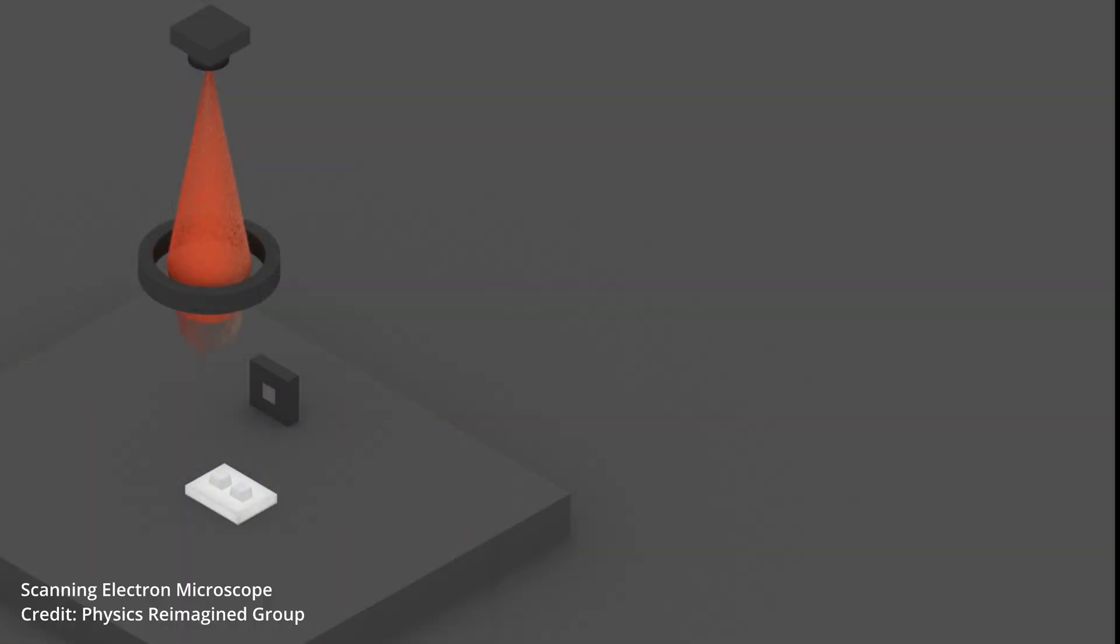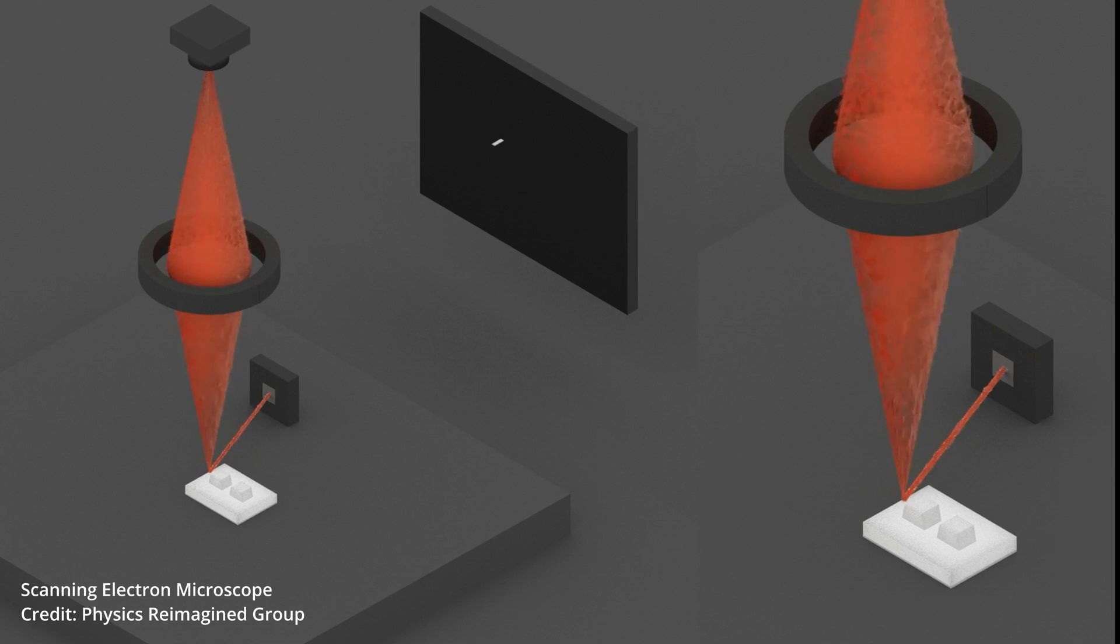In SEM, an electron gun accelerates a beam of electrons onto your sample, and the beam scans the sample surface. All this happens in vacuum because the electrons are easily scattered by air.